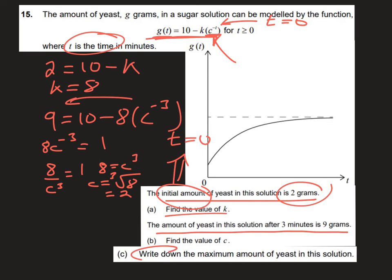Finally, in part C, write down the maximum amount of yeast in the solution. Write down means you don't have to do too much. You can see here we have an asymptote—the function is getting closer and closer towards this point. You can either use your GDC now that you've got the function.